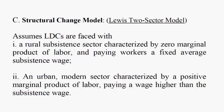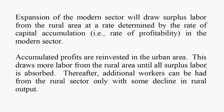Then there is the two-sector model due to Sir Arthur Lewis — the structural change model. This model assumes that developing countries are faced with a rural subsistence sector characterized by zero marginal product of labor, meaning the production function has maxed out so additional workers do not contribute anything to output, and it pays workers a fixed average subsistence wage. The second key assumption is an urban modern sector characterized by a positive marginal product of labor, paying a wage higher than the subsistence wage. Expansion of the modern sector will draw surplus labor from the rural area at a rate determined by the rate of capital accumulation — i.e., the rate of profitability — in the modern sector.